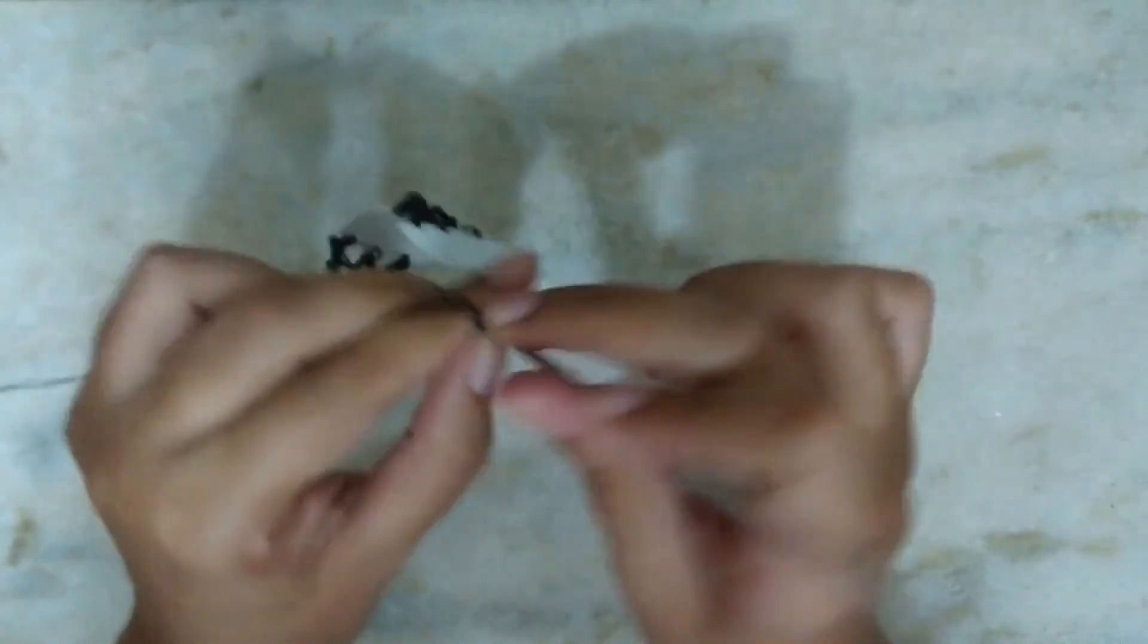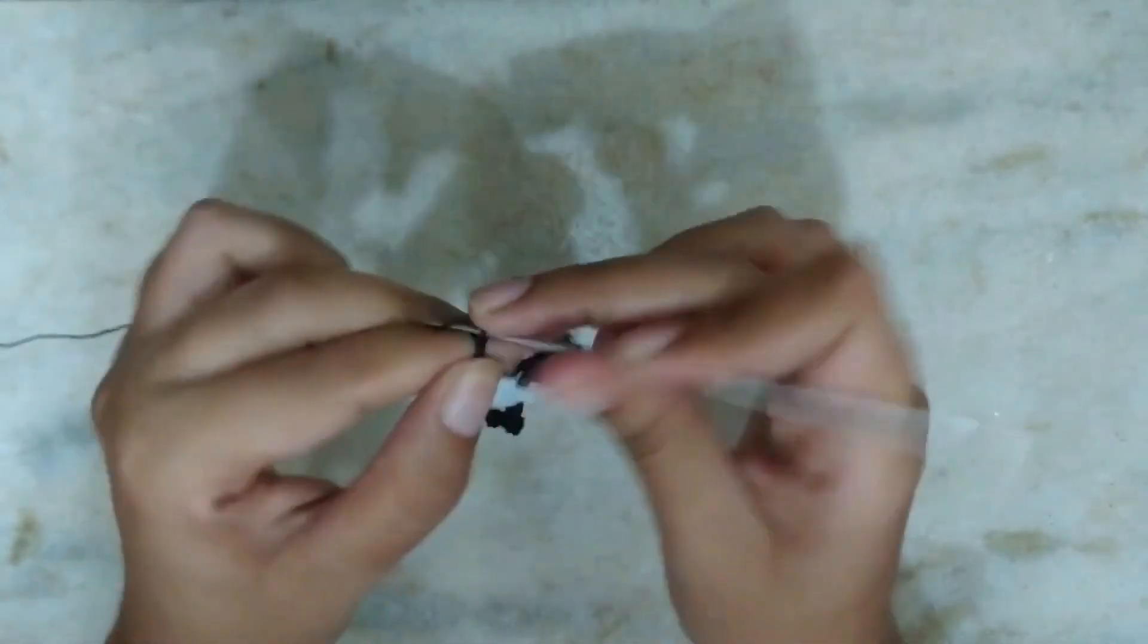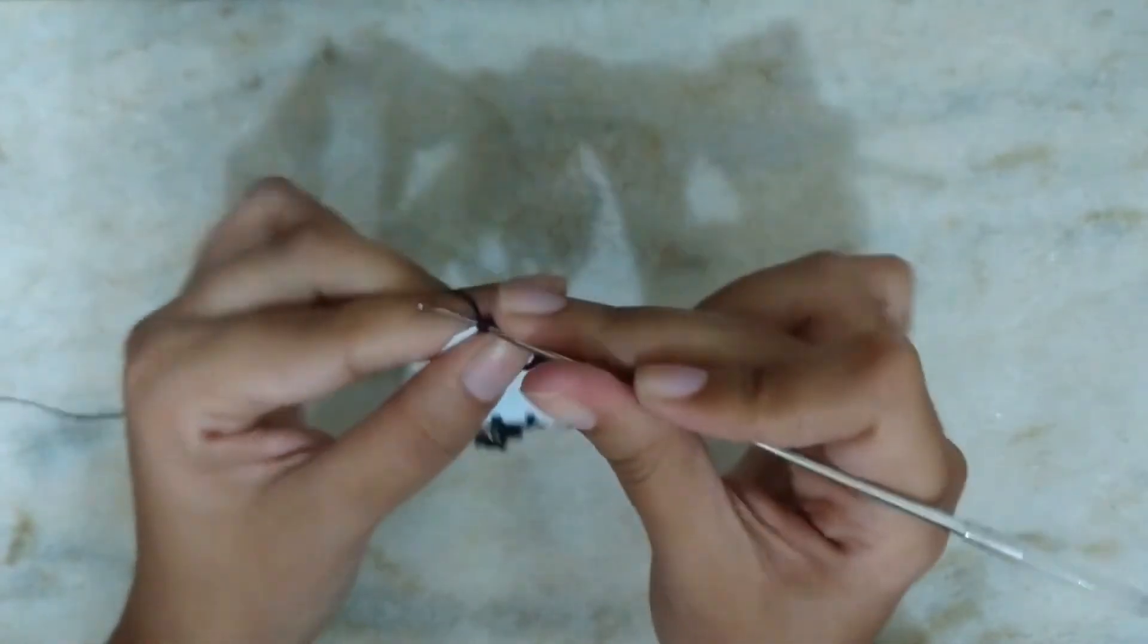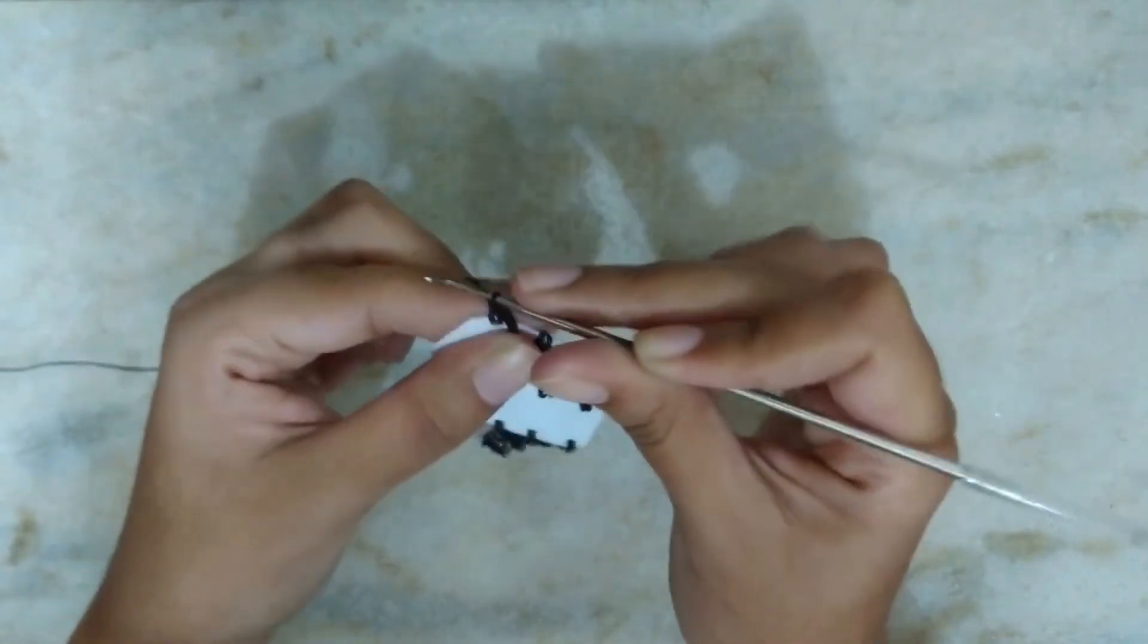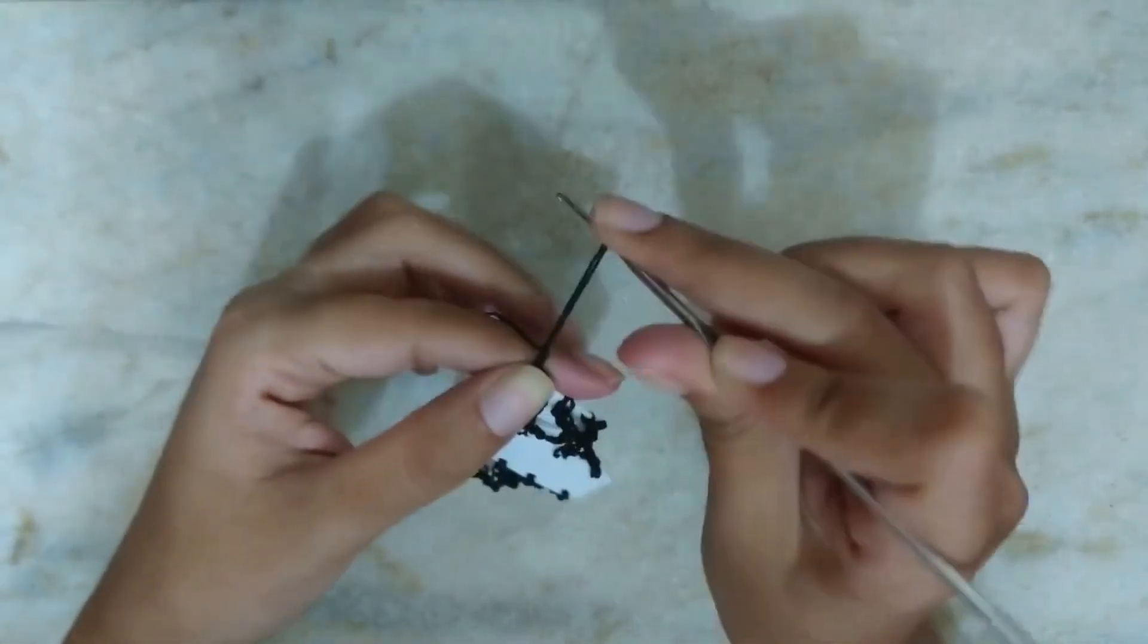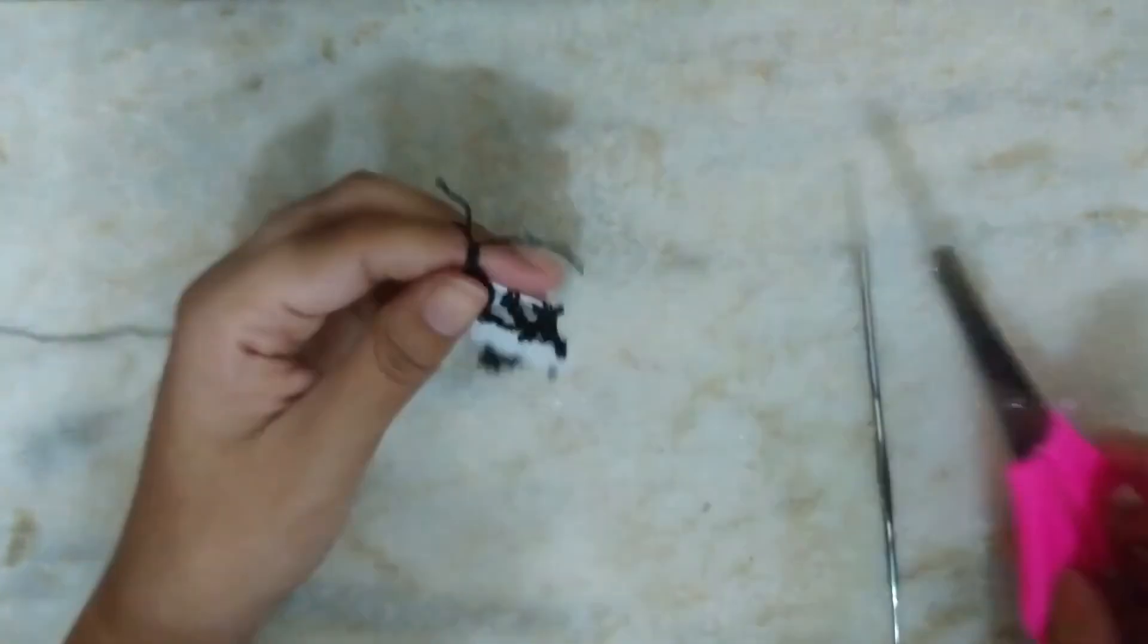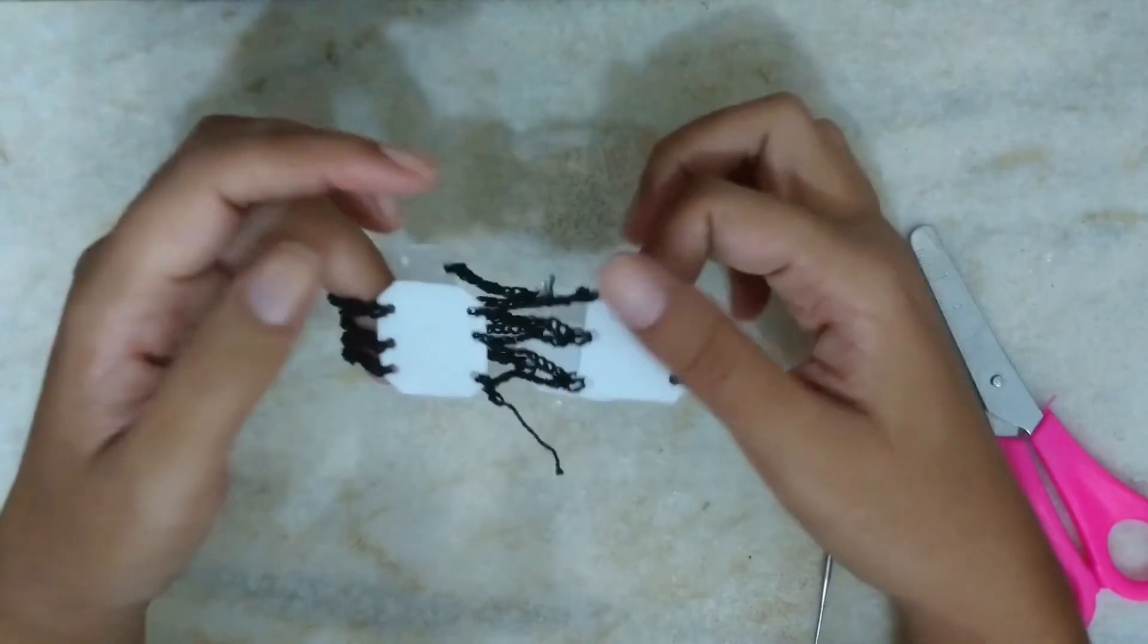Eight chain stitches. And I'm going to this part here, I'm going to put it in the bottom. Now I'm going to do two stitches, I'm going to do it here, I'm going to do it here, and this way I'm going to unify this part.